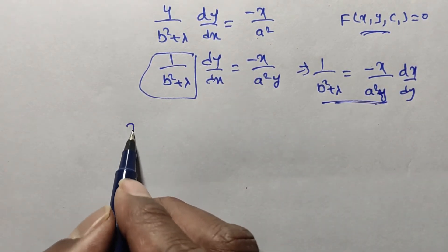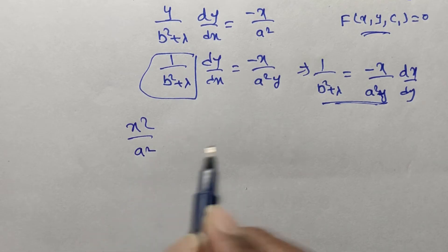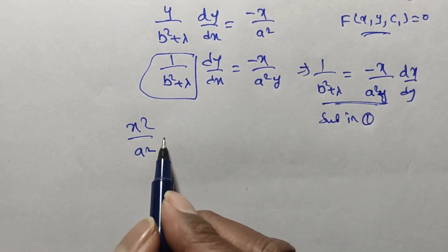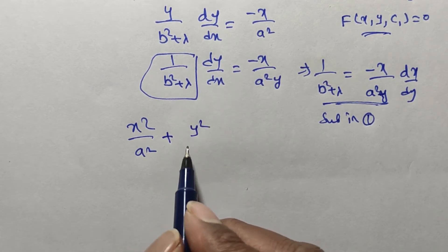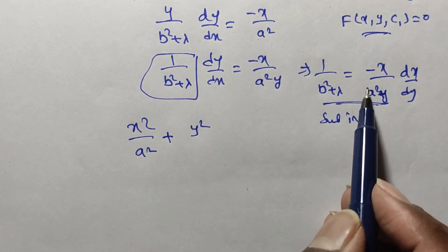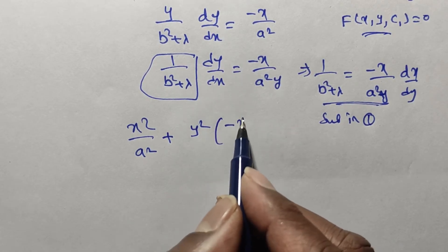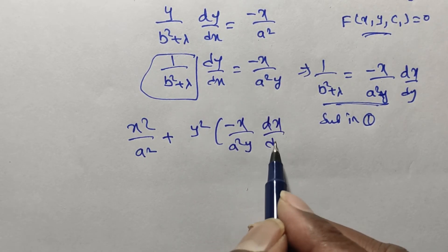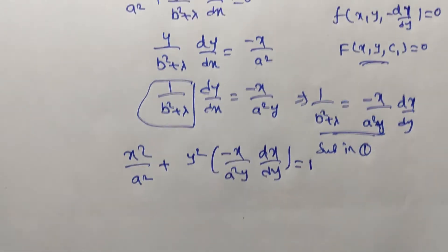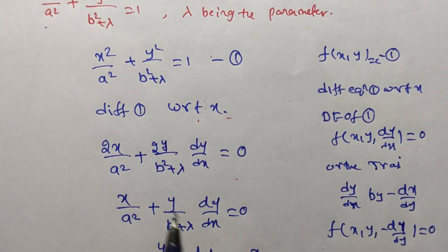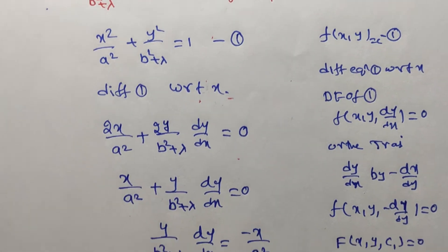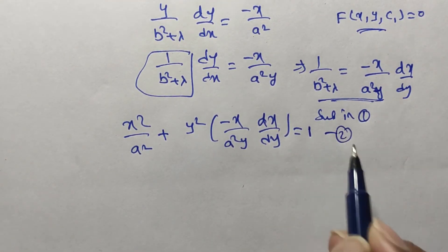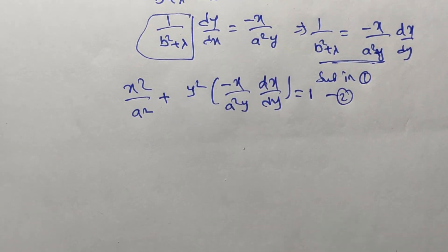Substituting into equation 1: x²/a² + y² · [−x/(a²y) · dx/dy] = 1. The denominator contains y and the numerator has y², so y cancels. This gives the differential equation of equation 1. But what we require is the orthogonal trajectory.